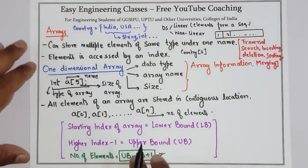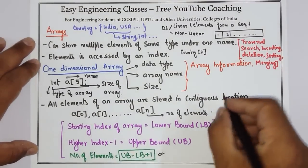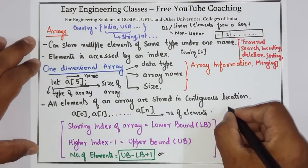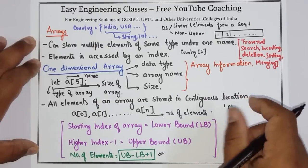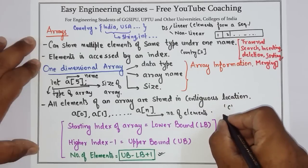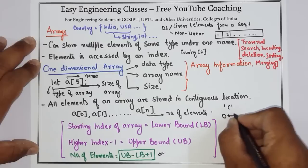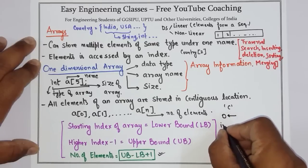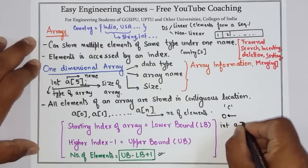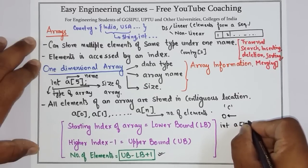Let's see one example of this. In C language, the array starts at location zero — the starting index in C language is zero. So if there is an array declared as int a[10],